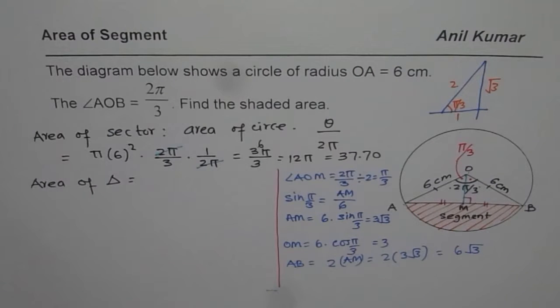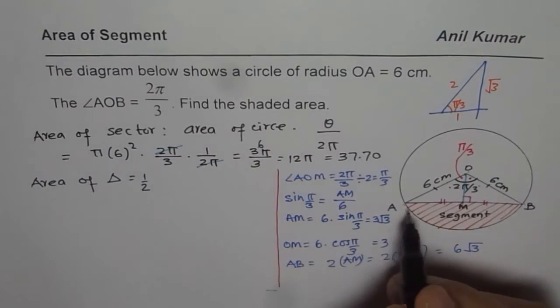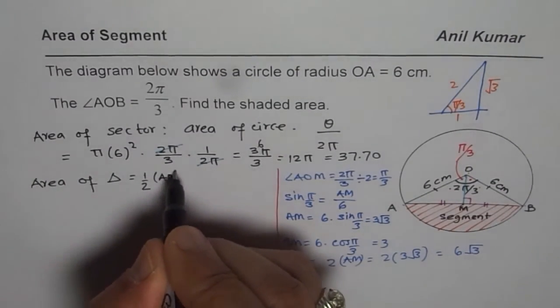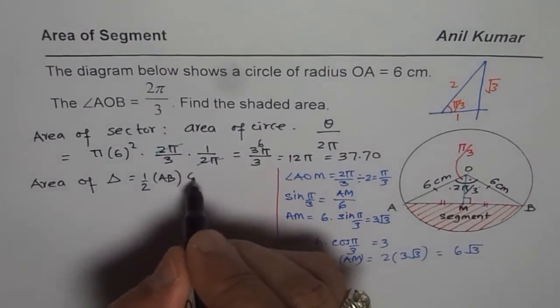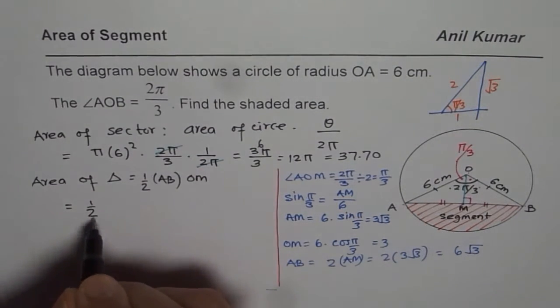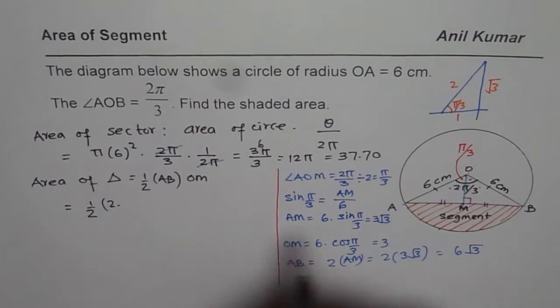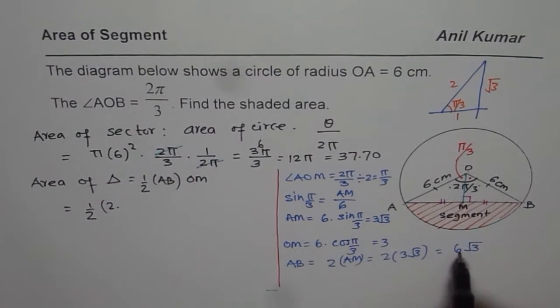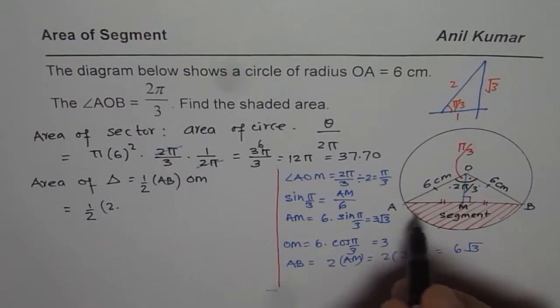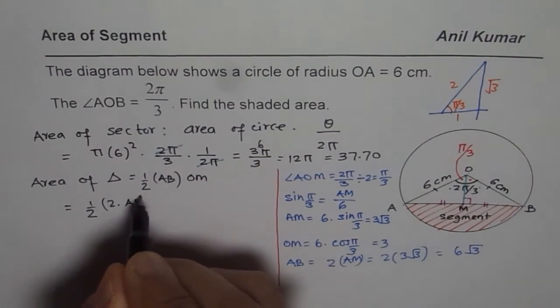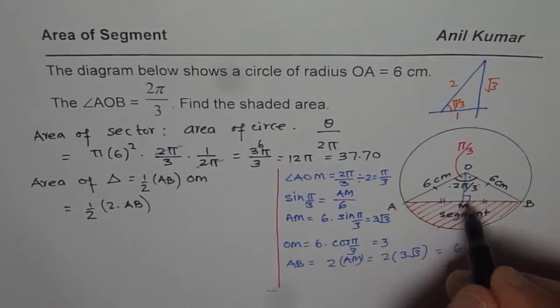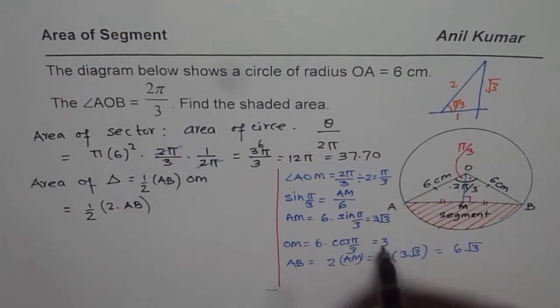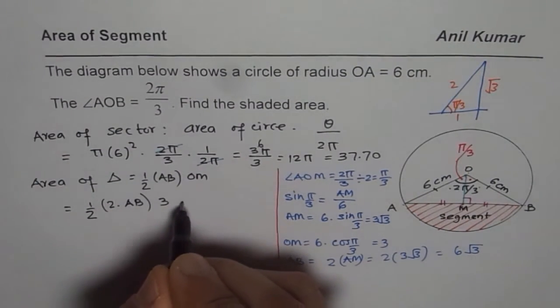So we can substitute these values and find the area of triangle. So we can say that the area of triangle here is half base AB times height of OM. So we will write this as equal to half AB will be 2 times AM, we actually found that 6 we could write that also. So we will say 2 times AM for the time being and OM is 3 for us.